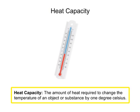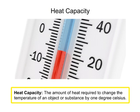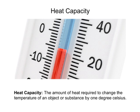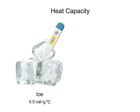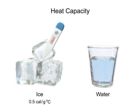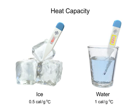Heat capacity is the amount of heat required to change the temperature of an object or substance by 1 degree Celsius. The heat capacity of water varies depending on its phase. As solid ice, the heat capacity of water is 0.5 calories per gram for every 1 degree Celsius, which means it takes half a calorie to raise the temperature of 1 gram of ice 1 degree Celsius. As a liquid, water's heat capacity is 1 calorie per gram for every 1 degree Celsius, so it takes 1 calorie of heat energy to raise 1 gram of water 1 degree Celsius.